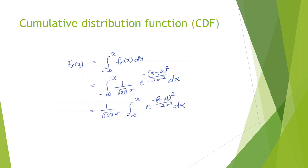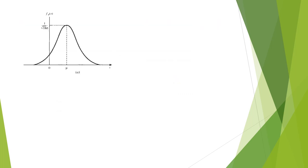To simplify this integral, we consider how the distribution is plotted. It has amplitude 1/(sqrt(2π) * sigma) and is centered at mu. To shift the graph so that the mean becomes zero and the distribution becomes narrower, we subtract mu from x and divide by sigma, converting to a standard normal form.